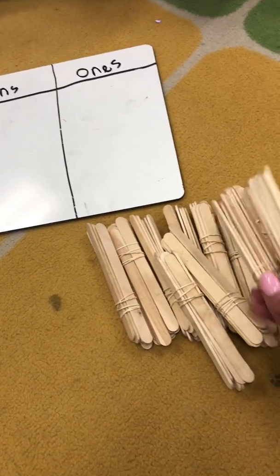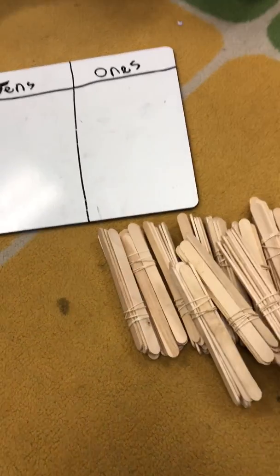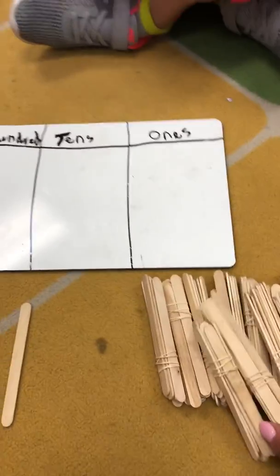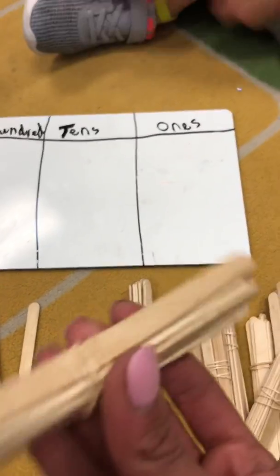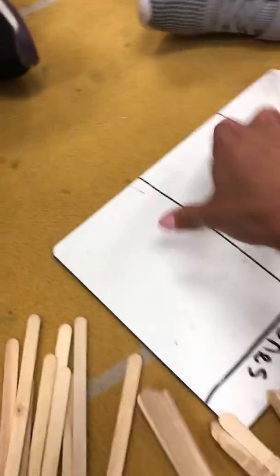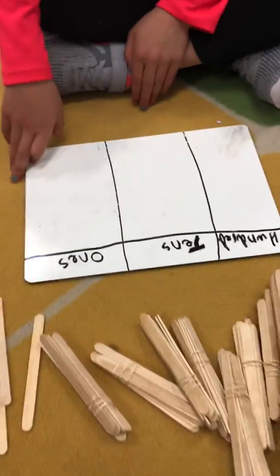If you don't have popsicle sticks, string works or even spaghetti strands that you can bundle together. So this is fairly easy and we are bundling them together with some rubber bands. Okay. Let's have you go first. You pick the number.